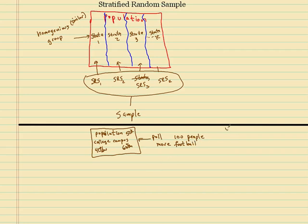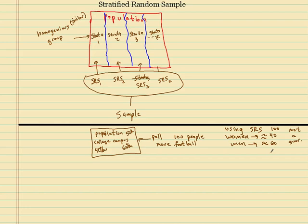If I take 100 people using an SRS, the sample should pretty much represent the population. So if you randomly pick 100 people, how many women do you expect? We expect around 40 out of 100, and about 60 men. But this is not guaranteed. Would you be surprised if we ended up with 45 girls and 55 guys using an SRS? No, you wouldn't be surprised.